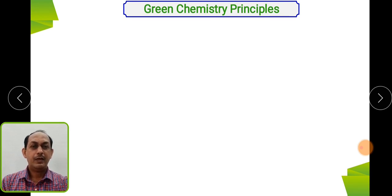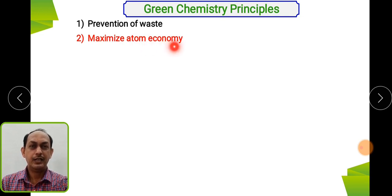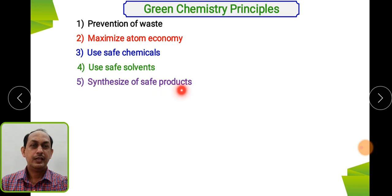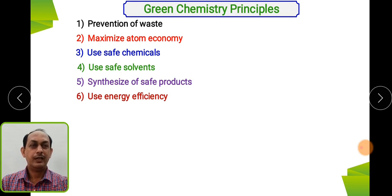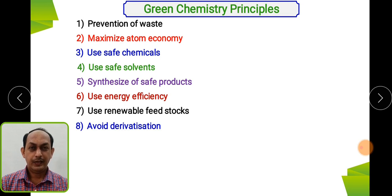There are 12 principles of green chemistry. If you follow these 12 principles, that particular synthesis will be called green synthesis. Let us see them one by one. First is prevention of waste — whatever byproducts form, you must prevent their formation. Second, your ideal synthesis must incorporate maximum atoms into the product — this is atom economy. Third, use of safe chemicals. Fourth, use of safe solvents. Fifth, synthesis of safe products, safe in terms of hazardous issues.